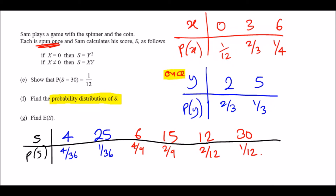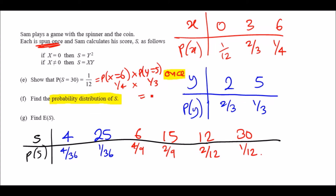To show that P(S=30) = 1/12: P(X=6) times P(Y=5) = 1/4 times 1/3 = 1/12. Confirmed.